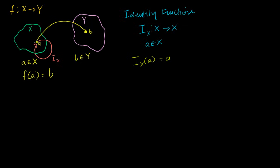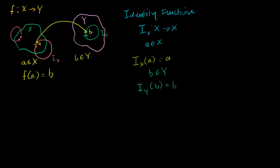That's the identity function on X, especially as it applies to point a. If you apply it to some other point in X, it would just refer back to itself. You could also have an identity function on Y. So let's say b is a member of Y — the identity function on Y applied to b would just refer back to itself, equal to b. You might say these are silly functions, but they're actually a useful notation as we progress through our explorations of linear algebra.